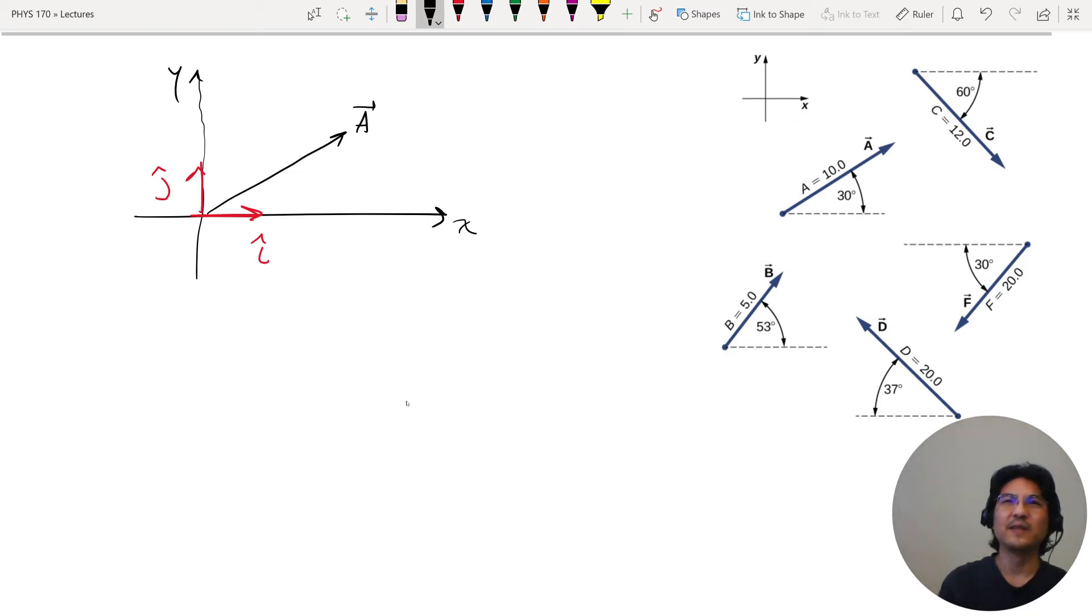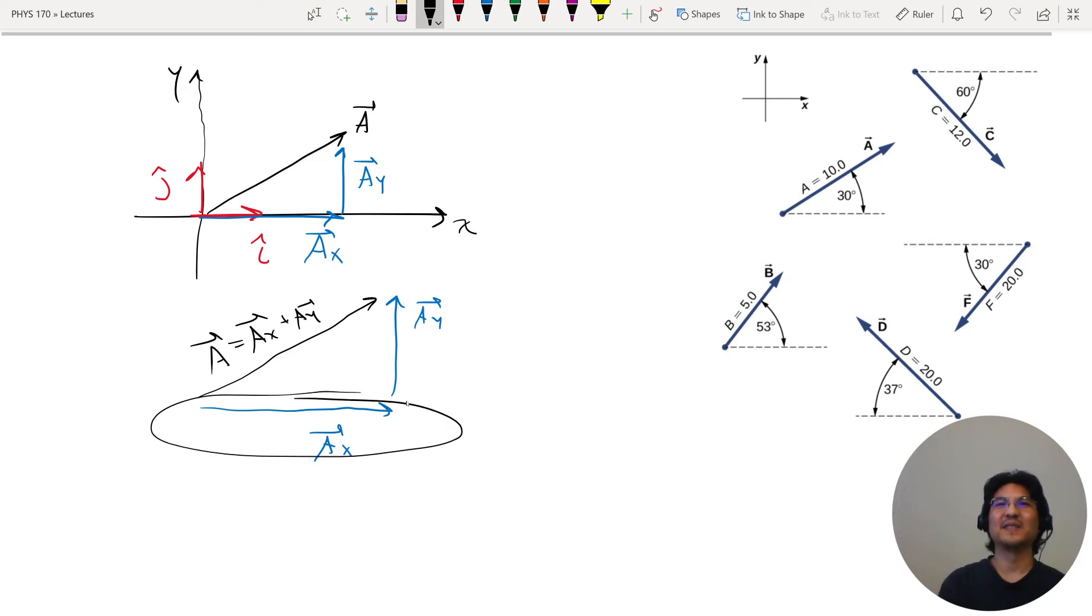So I can decompose vector A into components like this. Let's say this is Ax and this is Ay. So Ax plus Ay, if you add these together, you get vector A. What happened was, this is the component of vector A parallel to the x-axis, this is the component of vector A parallel to the y-axis, so I split it up into these two components, and they just add together.